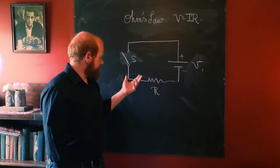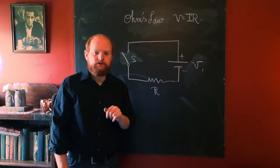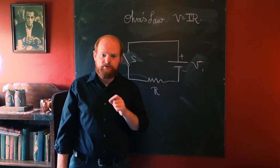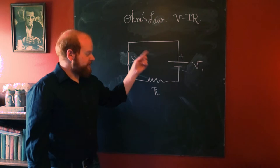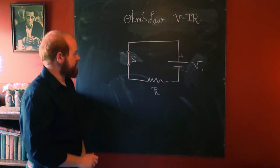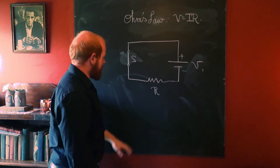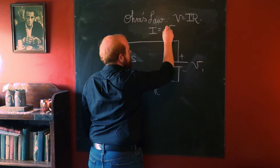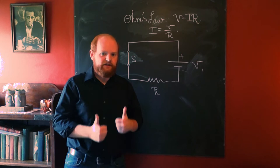Here we have a very simple direct current circuit with one resistor, one battery, and a switch that is currently open. The question is: what is the current running through the circuit when we throw the switch closed? From the first half of the semester, using Ohm's law — V = IR — we rearrange to get current I equals voltage divided by resistance.